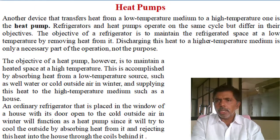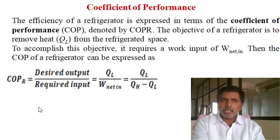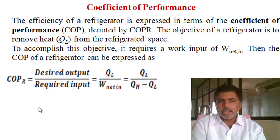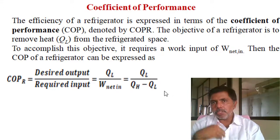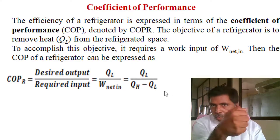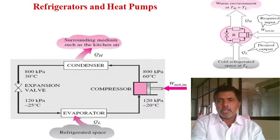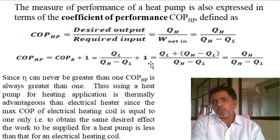Coming to the performance — COP, coefficient of performance — this is what we use here instead of efficiency. COP means efficiency: desired output by required input. Required input W_net = Q_H minus Q_L. The desired effect for a refrigerator is Q_L; for a heat pump it is Q_H. COP of heat pump = Q_H / (Q_H − Q_L), which equals COP of refrigeration plus 1.